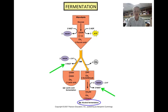Alcoholic fermentation is another very common type of fermentation. The final electron acceptor in alcoholic fermentation is acetaldehyde, which is reduced to form ethanol. At the same time, NADH is oxidized to NAD+. Carbon dioxide is also produced.